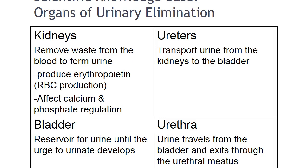The ureters are tubular structures that transport urine from the kidneys to the bladder; urine draining from the ureters to the bladder is sterile. The urinary bladder is a hollow, distensible muscular organ that stores and excretes urine, lying in the pelvic cavity behind the symphysis pubis. The urethra is the structure through which urine leaves the body. It descends through a layer of skeletal muscle known as the pelvic floor muscles; when these muscles are contracted, it is possible to prevent urine flow through the urethra.